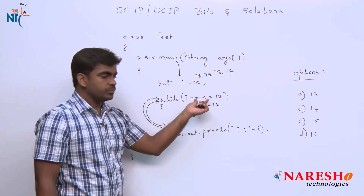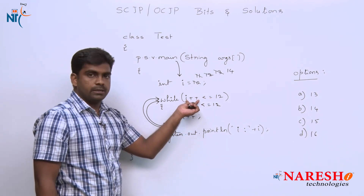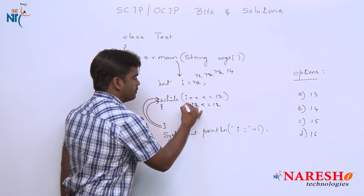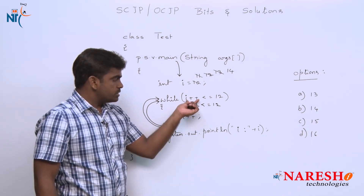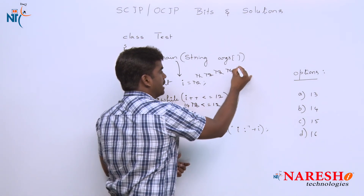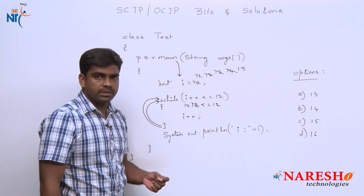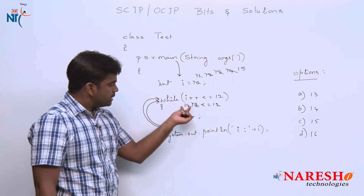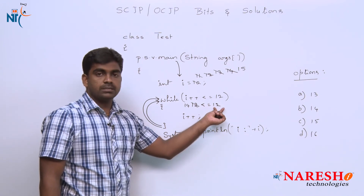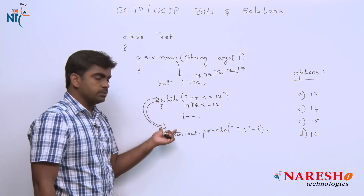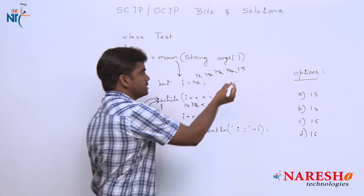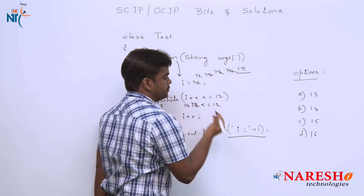The loop repeats as long as the condition is true. Now it will substitute the value: I value is 14, but this is a post increment, so as soon as you substitute the value, automatically the value increases by 1, so I becomes 15. But look at the condition: 14 is less than or equal to 12 — the condition has failed. The while loop terminates and the control comes out of the loop and prints the I value. The final I value in the program is 15.